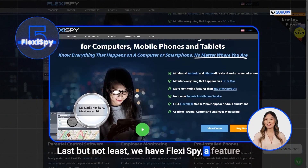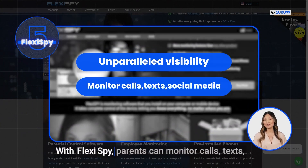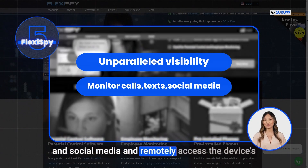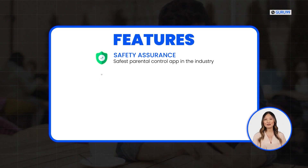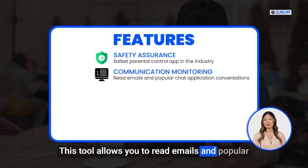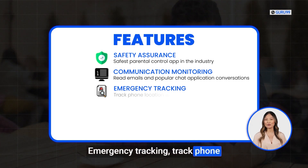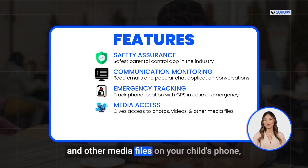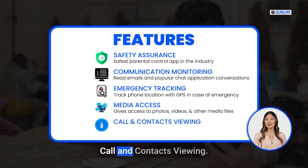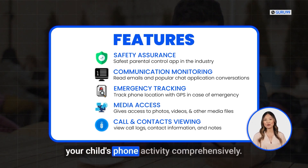Last but not least, we have FlexiSpy, a feature-rich parental control app that offers unparalleled visibility into your child's device activity. With FlexiSpy, parents can monitor calls, texts, and social media, and remotely access the device's camera and microphone for added security. Features include: safety assurance — the app is the safest parental control app in the industry; communication monitoring — read emails and popular chat app conversations; emergency tracking — track phone location with GPS in case of emergency; media access — view photos, videos, and other media files on your child's phone; and call and contacts viewing — view call logs, contact information, and notes.